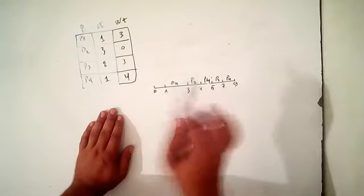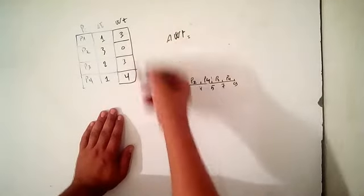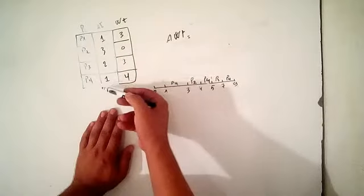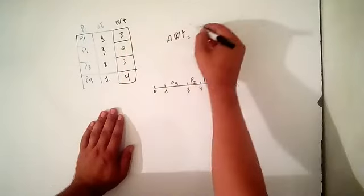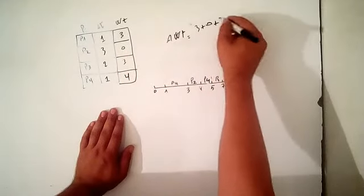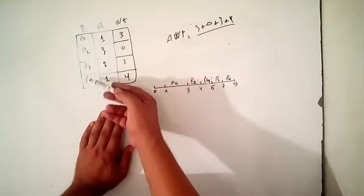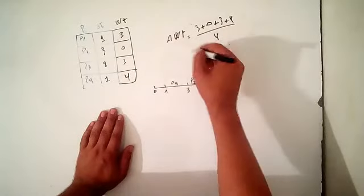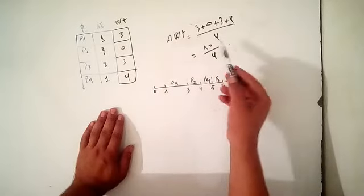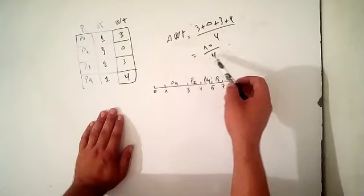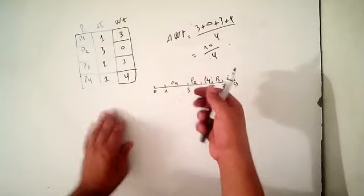Now let's calculate the average waiting time. The average waiting time equals the sum of the waiting times of all processes divided by the number of processes. That is 3 plus 0 plus 3 plus 4, over 4. This equals 10 over 4. That is the average waiting time. I hope you understood what I explained in this tutorial — see you later.